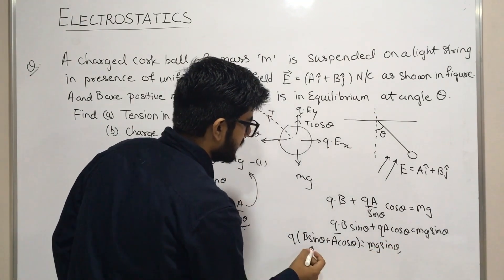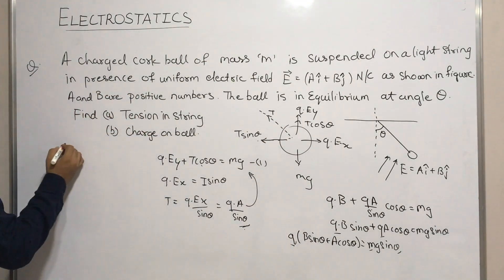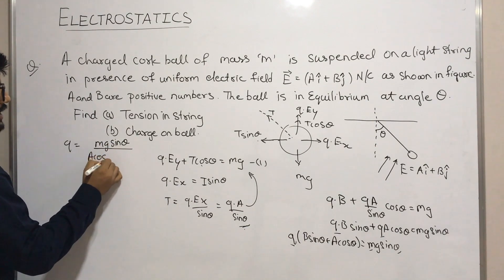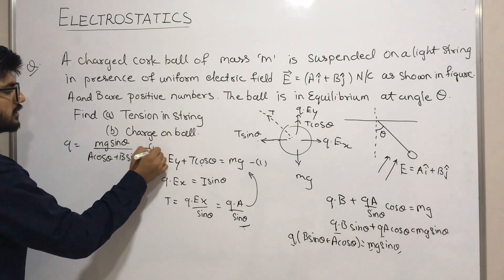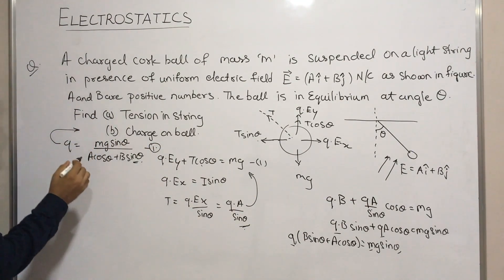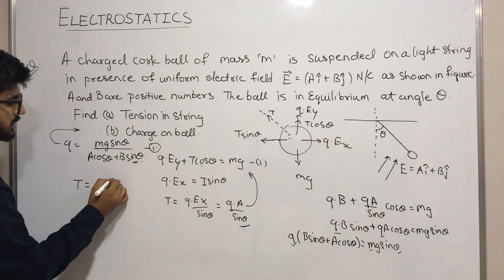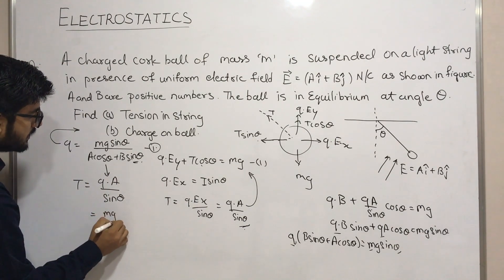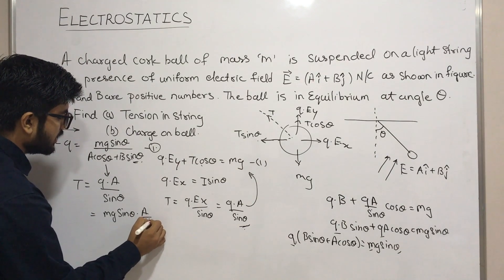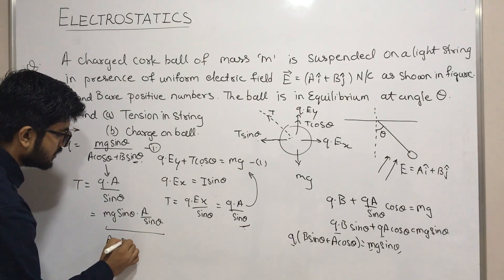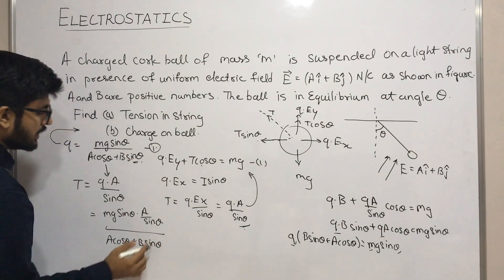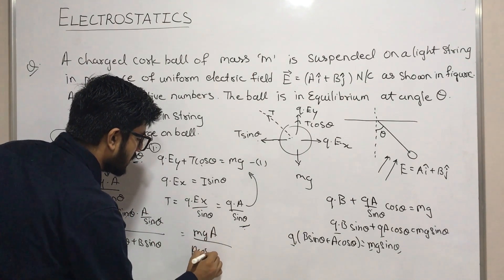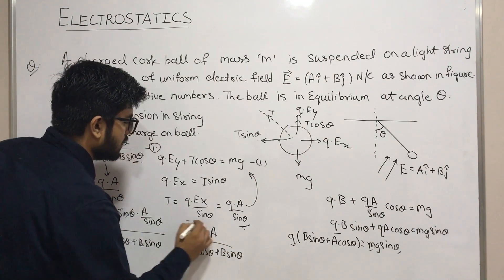Taking Q as common: Q·(A·cos(θ) + B·sin(θ)) = Mg·sin(θ). With theta given, mass given, A and B given, our charge Q equals Mg·sin(θ) upon (A·cos(θ) + B·sin(θ)). For the tension, T = Q·A / sin(θ). Substituting Q, we get T = Mg·A upon (A·cos(θ) + B·sin(θ)). This is our solution.